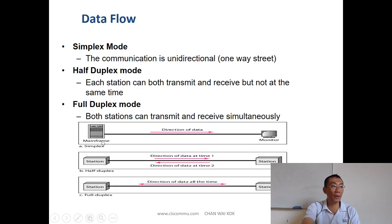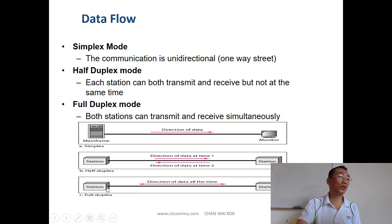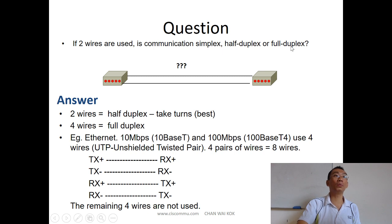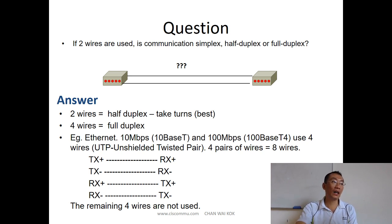You can have simplex, half duplex, and full duplex. Simplex means one direction only. Half duplex means one direction at a time, and full duplex means both directions at the same time. If you use two wires, the best you can do is half duplex — if the sender and receiver take turns. For full duplex, four wires are required.